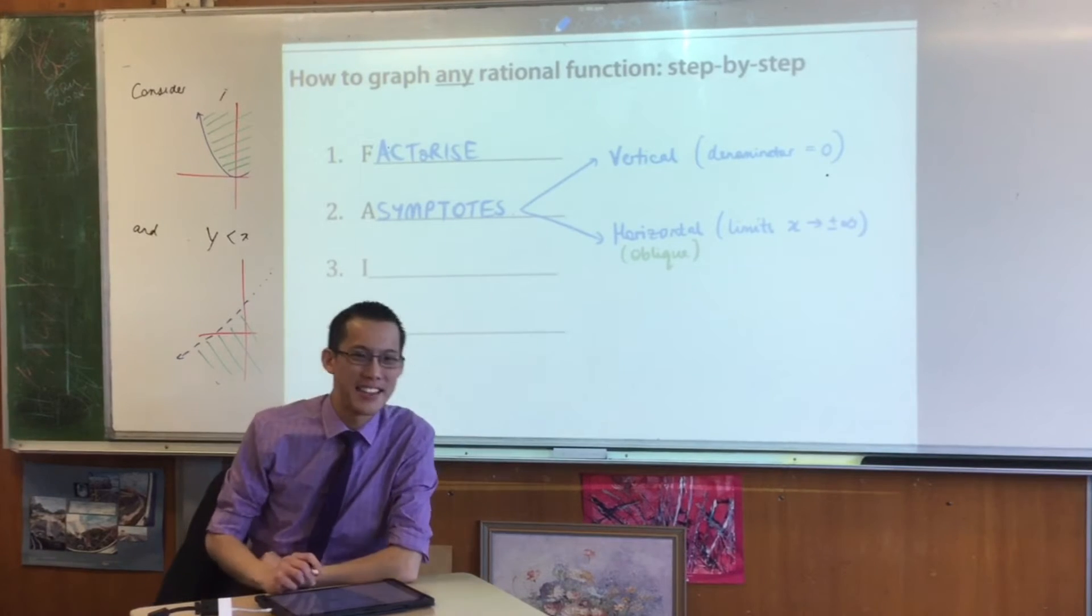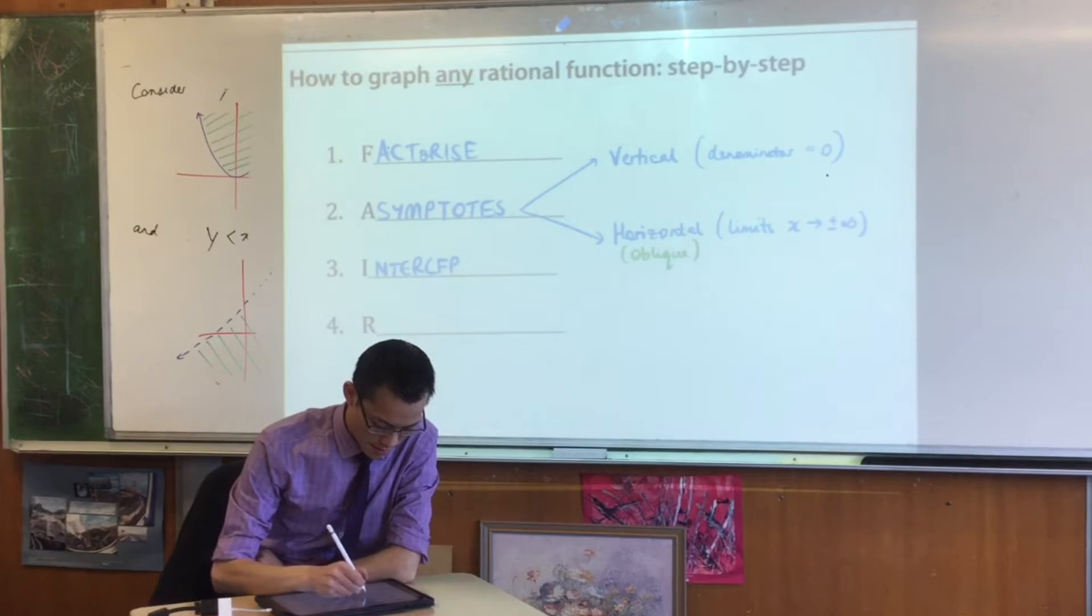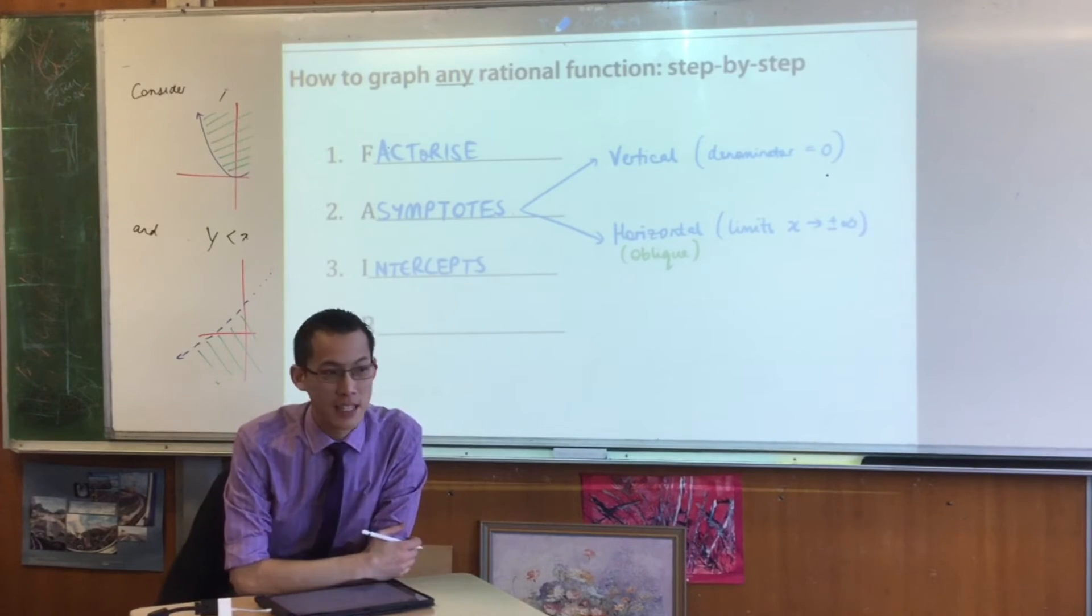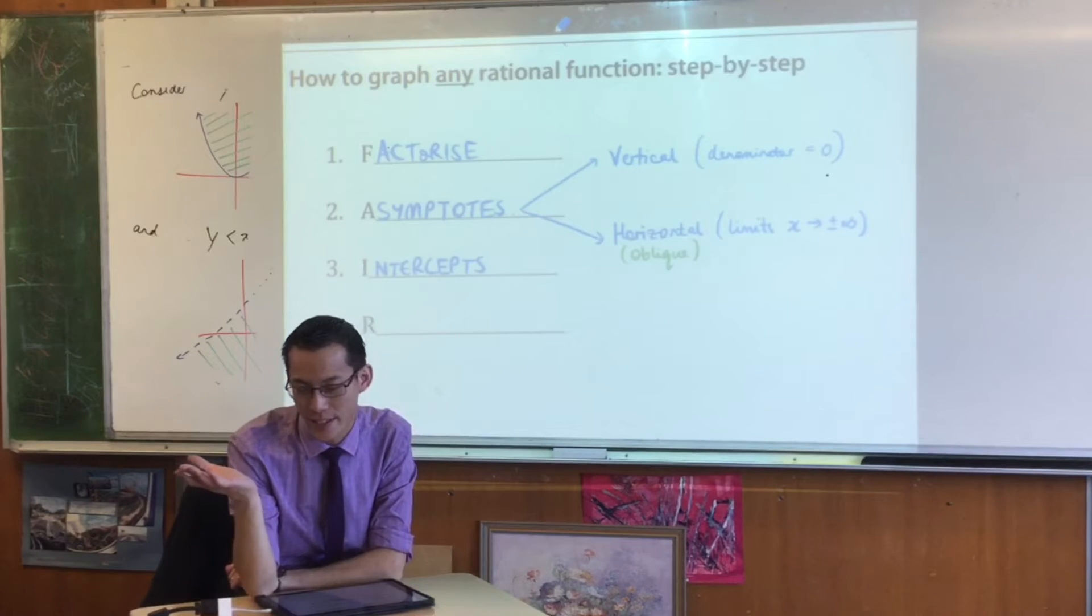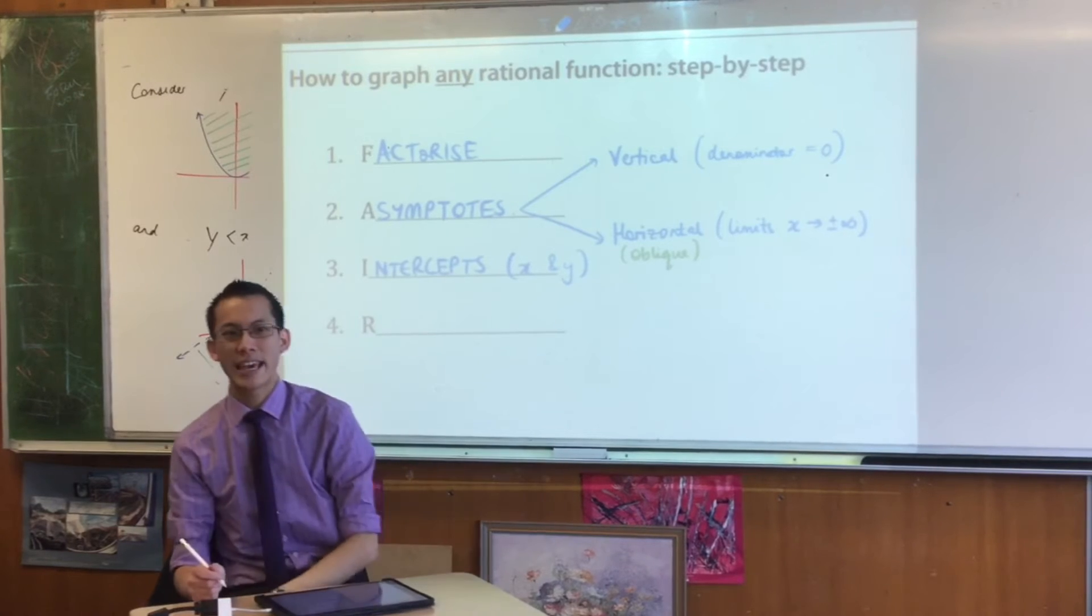That was asymptotes. You might have had a guess about what I stands for. Intercepts. So just remember, like asymptotes, there are two kinds. The two kinds of intercepts you're looking for are x and y.